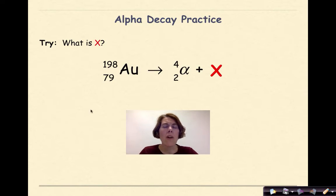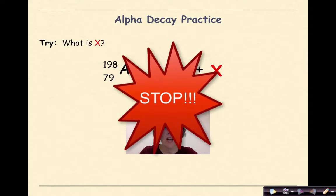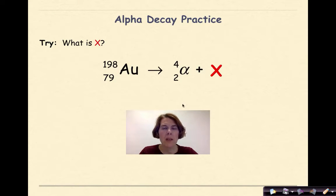Now you try. What is x? We're given your parent particle. We know that it's undergoing alpha decay. I'd like you to stop and try to figure out what x is. Welcome back. Let's see how you did. We know that the atomic number in the beginning for gold 198 is 79. So that means the number on the bottom over here, when I add these numbers together, have to add up to 79. So I know that 77 plus 2 will give me 79.